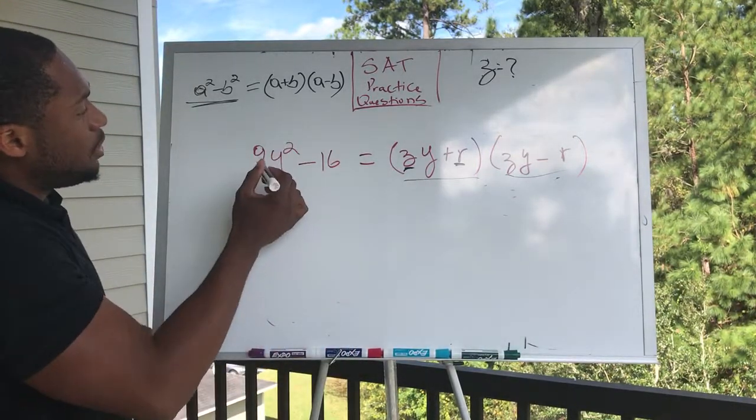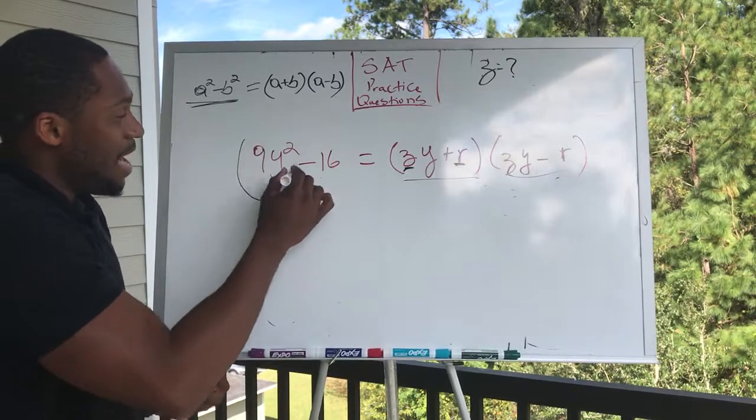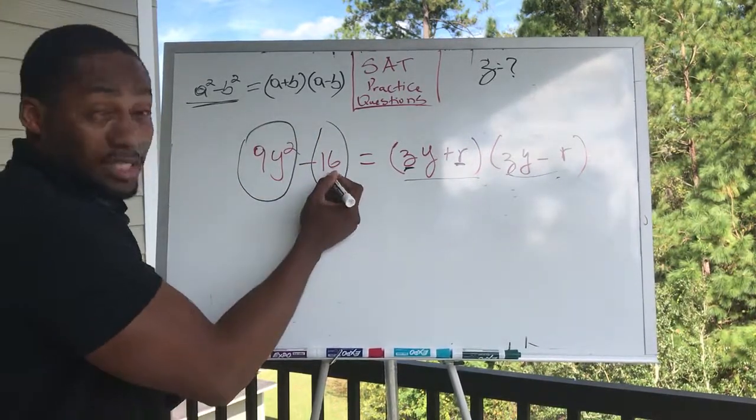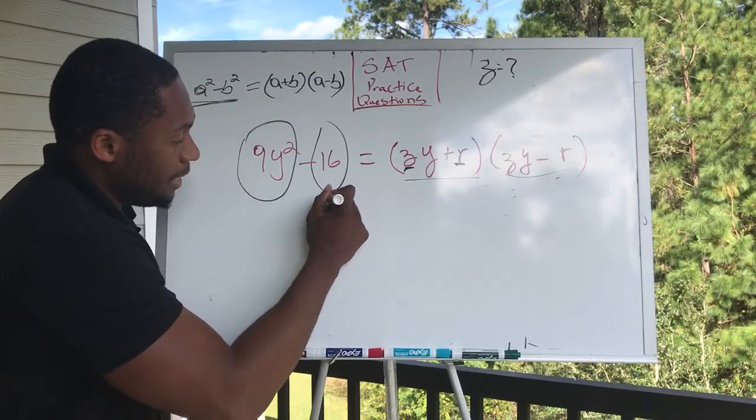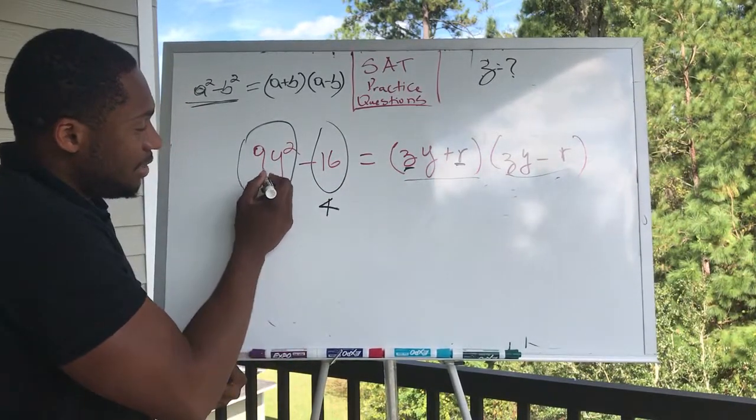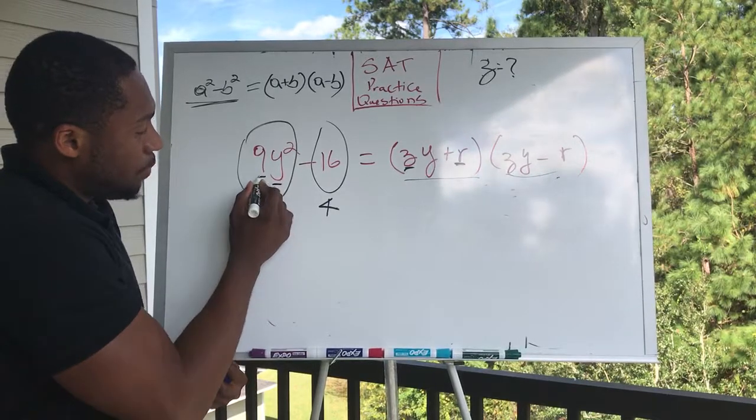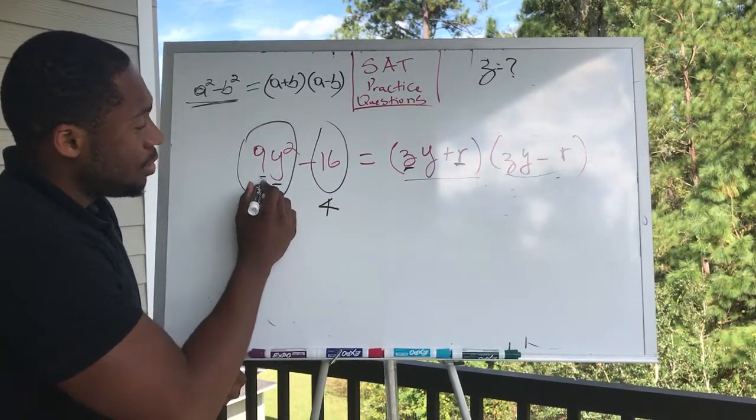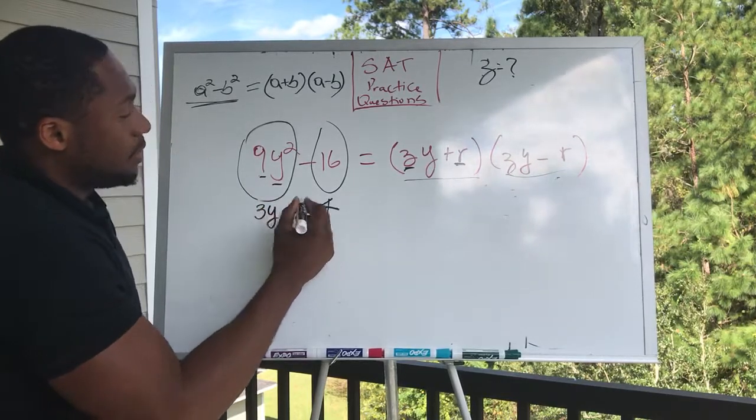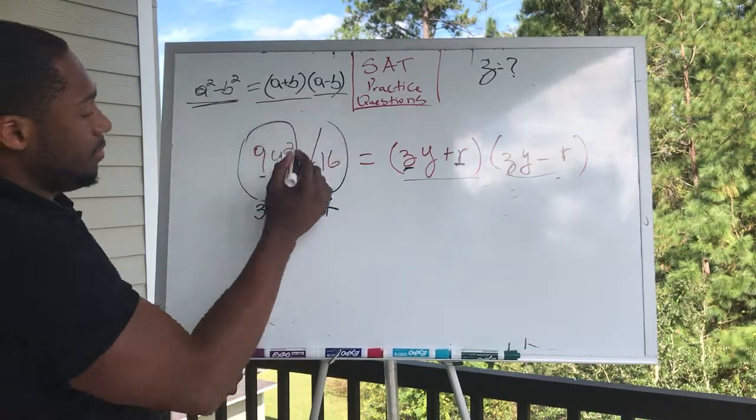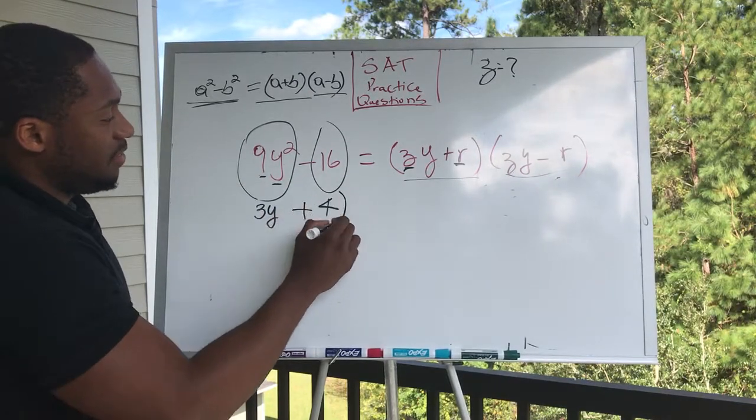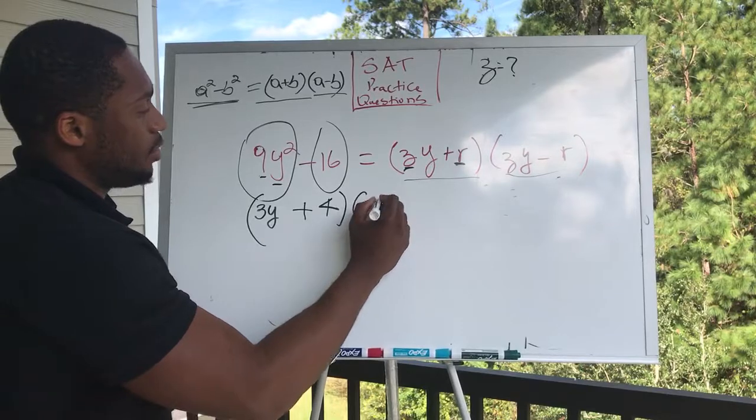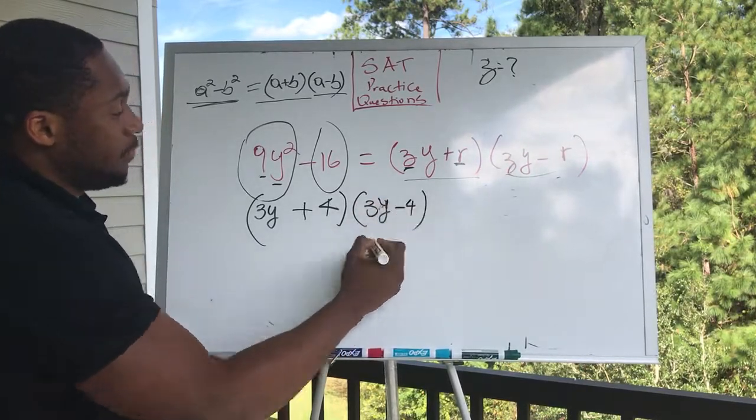So A squared minus B squared. So we better have this being a square and this being a square. Of course, 16 is the square root of what number? Four, right? And then nine, nine Y squared. So I want to take the square root of this part, square root of this part, three Y. So we're going to write it in terms of this. So three Y plus four, three Y minus four, three Y plus four, three Y minus four.